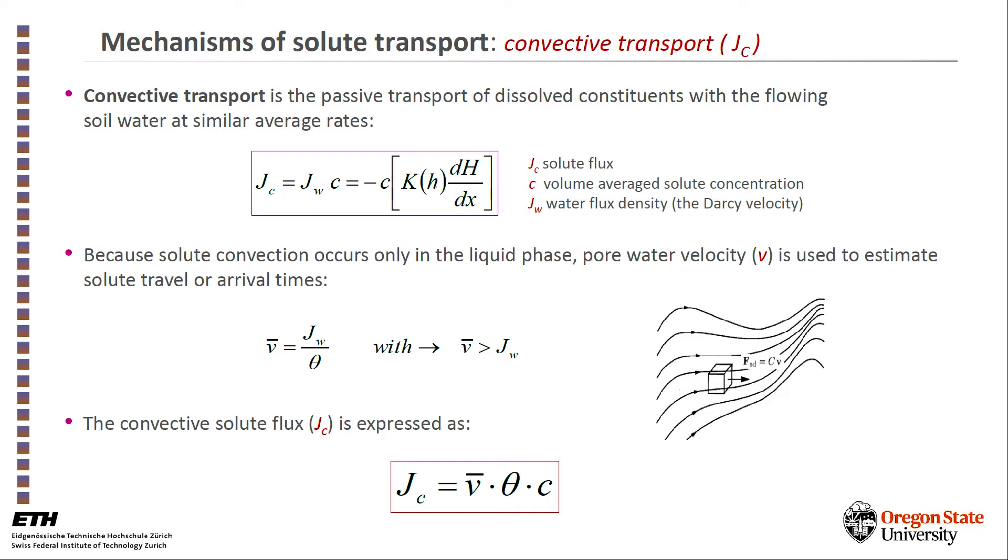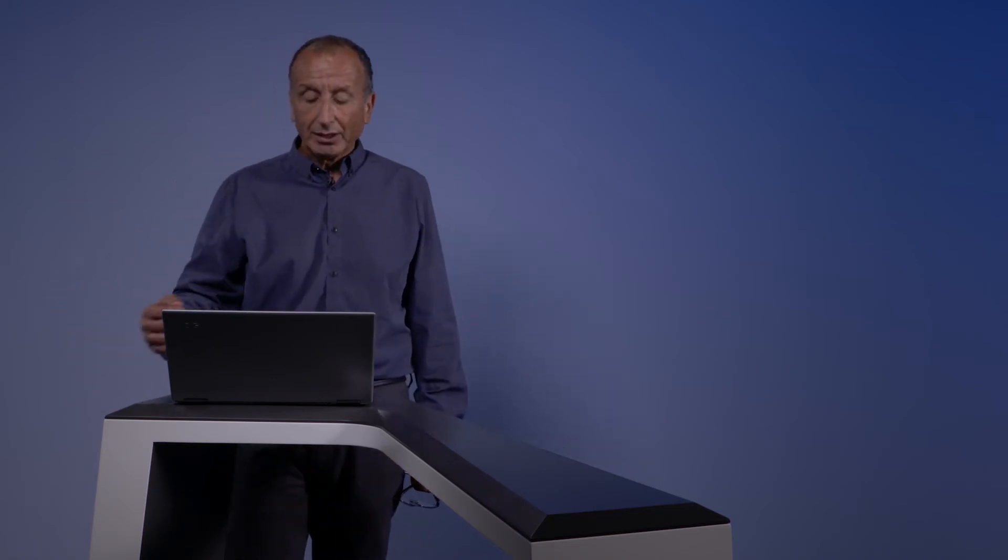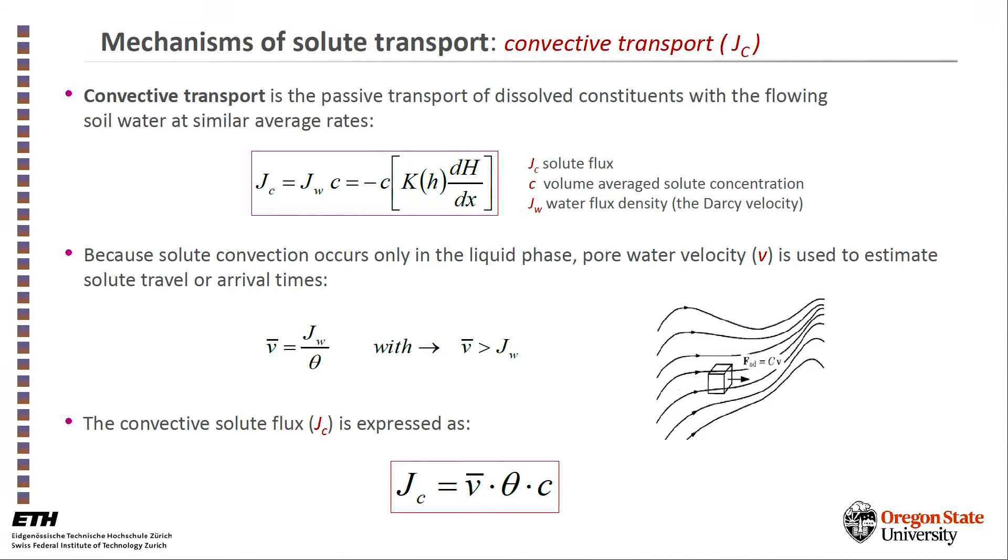Because the transport takes place only in the liquid phase of the soil, we look at pore velocity rather than the Darcian flux, which we mark by J_w. The Darcian flux divided by the water content in the soil will give us the average pore velocity. So we can describe the convective transport of solutes by the product of the average velocity in the pores, the water content in the cross-section that carries this transport, and the concentration of the solute.